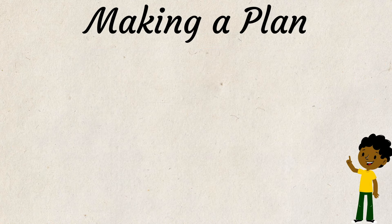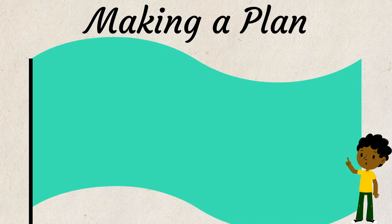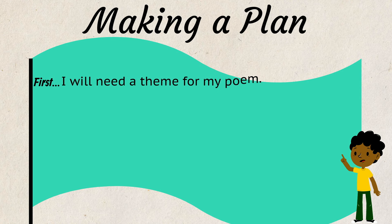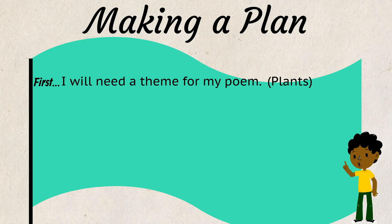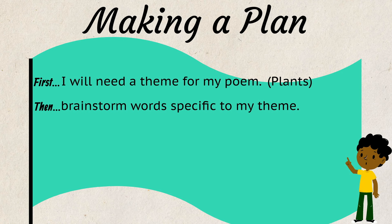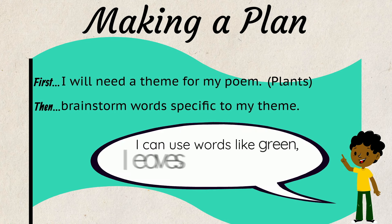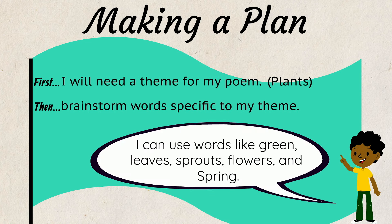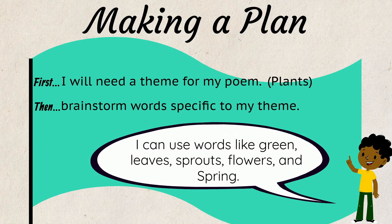Now, I will write my own haiku poem. First, I will need a theme for my poem. I think I will write about plants changing in spring. Then, I will need to brainstorm some of the words that would describe plants changing in spring. I can use words like green, leaves, sprouts, flowers, and spring.